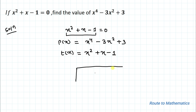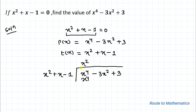Our p(x) is x⁴ - 3x² + 3 and we have taken the divisor as x² + x - 1. In the long division method, to cancel the first term we need to multiply by x². So x² multiplied with x² gives x⁴, plus x multiplied with x² gives x³, minus 1 multiplied with x² gives -x². Since the sign of x⁴ is positive we take minus; similarly the others take opposite signs.